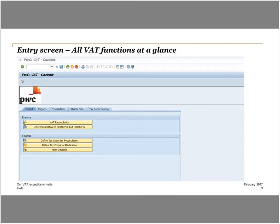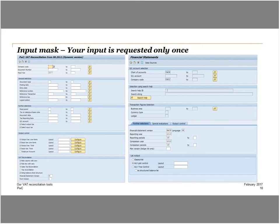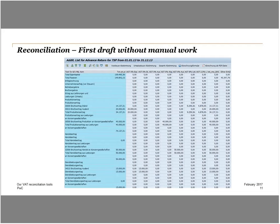The program provides the VAT-responsible person a cockpit, like the one a pilot has in an airplane. The preparation of the reconciliation requires only a minimum of manual input. The preparer only has to provide the system with information about the corresponding company code, fiscal year, and financial statement version. Entering this data and with only a few clicks, the program independently prepares the reconciliation, showing for each bookkeeping account the VAT treatment based on the VAT coding.